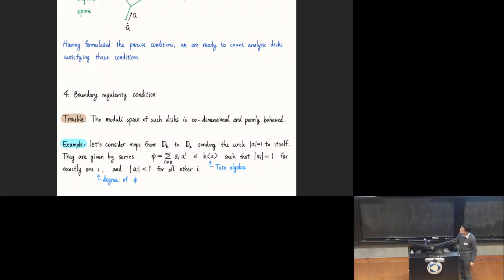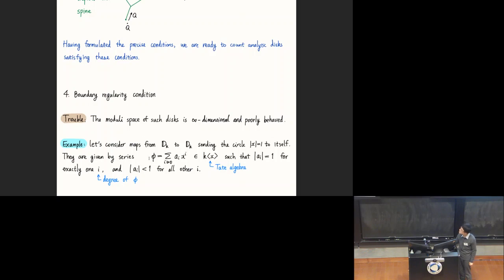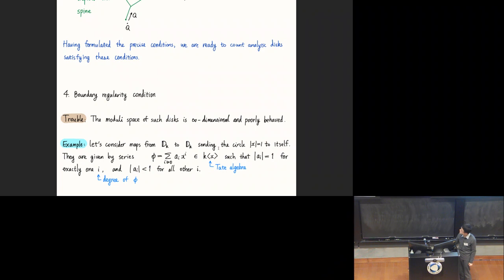Let's consider maps from the unit disk over a non-Archimedean field k to itself, sending also the boundary circle to itself. It's not hard to prove that all such maps are given by power series—we only need to know where x goes. This power series is an element in the Tate algebra, meaning the norm of the coefficient a_i goes to 0 as i goes to infinity. Furthermore, the condition that the circle maps to itself implies that the norm of a_i equals 1 for exactly one index i, which is the degree of the map φ, and the norm of all other coefficients is less than 1.